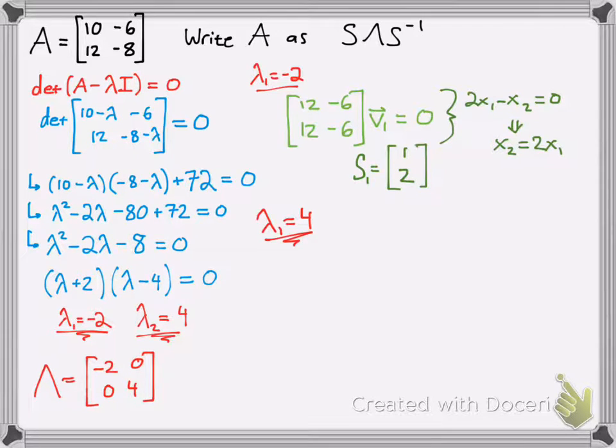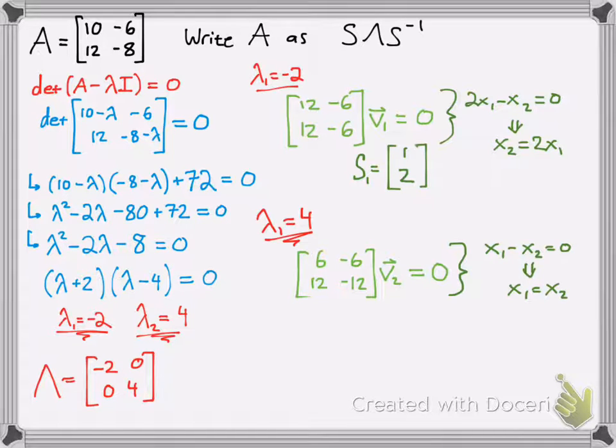Then you're going to do the same thing for your next eigenvalue, which is 4. You should get this as your matrix times V2, which is your second eigenvector, is equal to 0. So again, solve for x1 and x2. You should get x1 equals x2, so the simplest solution that I can think of is 1, 1.